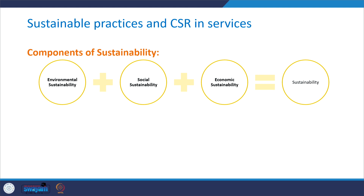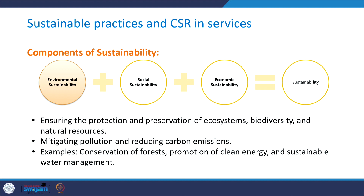There are three components of sustainability: environmental sustainability, social sustainability, and economic sustainability. The first one is environmental sustainability — ensuring the protection and preservation of ecosystems, biodiversity, and natural resources. Mitigation of pollution and reducing carbon emissions are also part of this component. For example, conservation of forests, promotion of clean energy, and sustainable water management practices address environmental sustainability concerns.